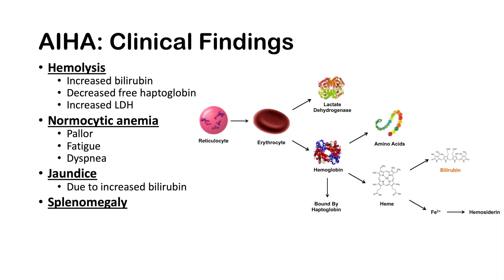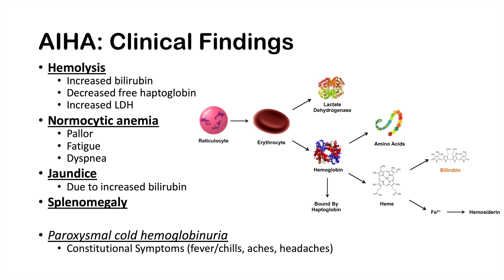There are additional clinical features specific to certain subtypes. In cold autoimmune hemolytic anemia, cold-induced phenomena like Raynaud's phenomenon may occur. In paroxysmal cold hemoglobinuria, constitutional symptoms such as fever, chills, aches, pains, and headaches may be seen. And as the name implies, hemoglobinuria — darkened urine — occurs during attacks triggered by cold exposure and rewarming. Hemoglobinuria may also be seen in cold autoimmune hemolytic anemia.